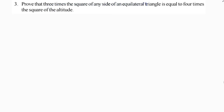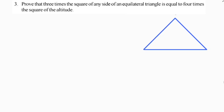Prove that 3 times the square of any side of an equilateral triangle is equal to 4 times the square of its altitude. Here I'll take equilateral triangle ABC. I need to prove three times the square of any side — so if I take AB squared — equals four times the altitude squared, so I'll draw altitude AD and prove that 3 AB² = 4 AD².